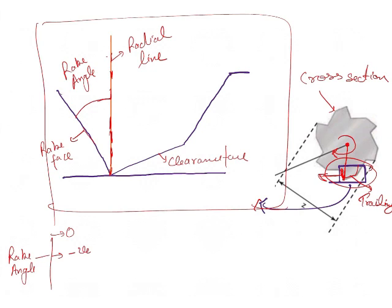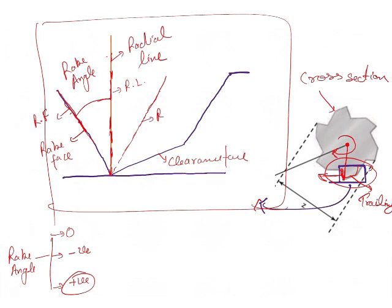The negative rake angle is when the rake face is leading or is ahead of the radial line. When the rake face is ahead of the radial line, that is called the negative rake angle. When the rake face is behind the radial line, that is called the positive rake angle.